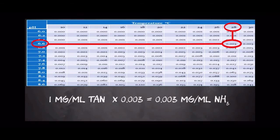Finally, we will multiply the TAN by this conversion factor to get the total ammonia. So the math is pretty straightforward here, and we'll multiply 1 ppm by the conversion factor of 0.003, which equals 0.003 ppm of NH3. And this is below the toxic level of free ammonia.